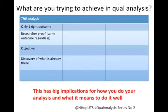Here we can see: what are you trying to achieve in qualitative data analysis? I'll talk through three different scenarios — each one will come up as a column on this table. The three are somewhat artificial; they're scarecrows, if you like, that I'm setting up. The point is not that these are hard categories, but to provoke thinking into which sort of analysis you're leaning towards.